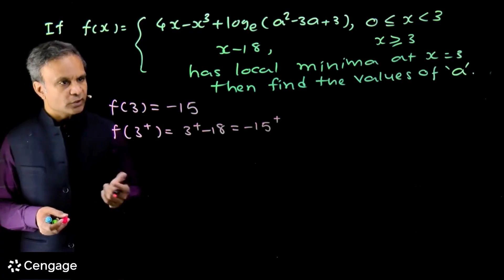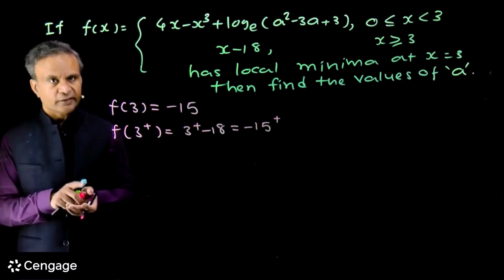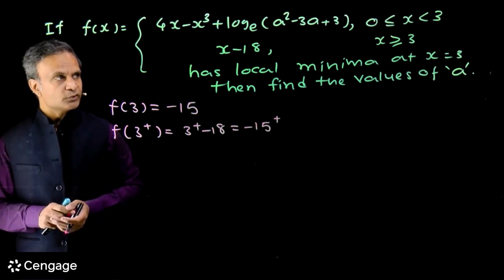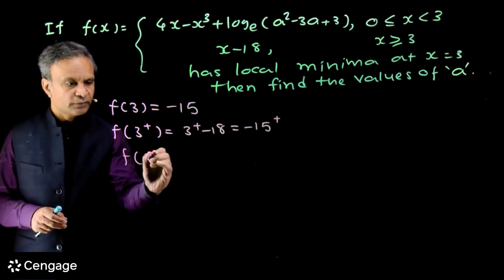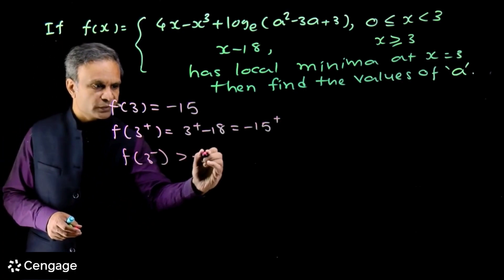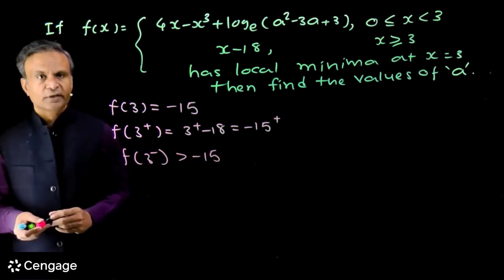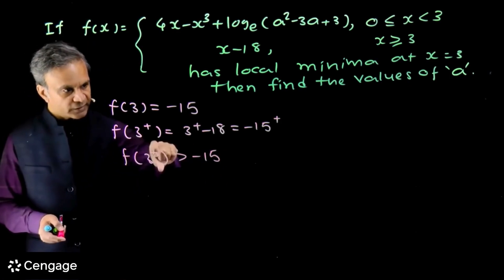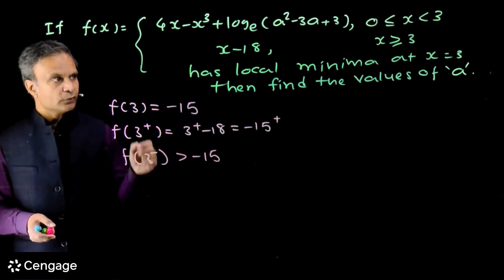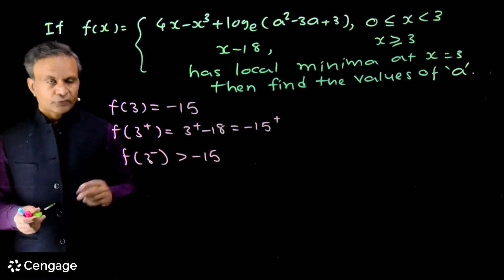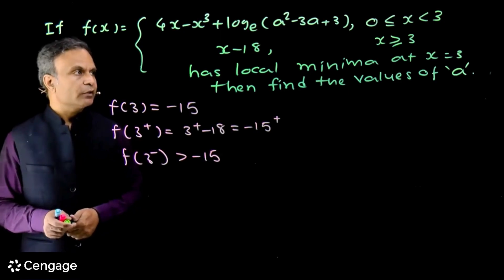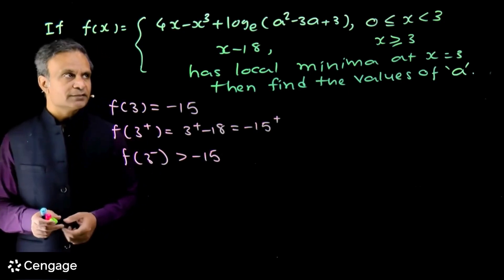So f(3+) is more than f(3). For x=3 to be a point of local minima, f(3−) must also be more than f(3), i.e., f(3−) must be greater than −15.